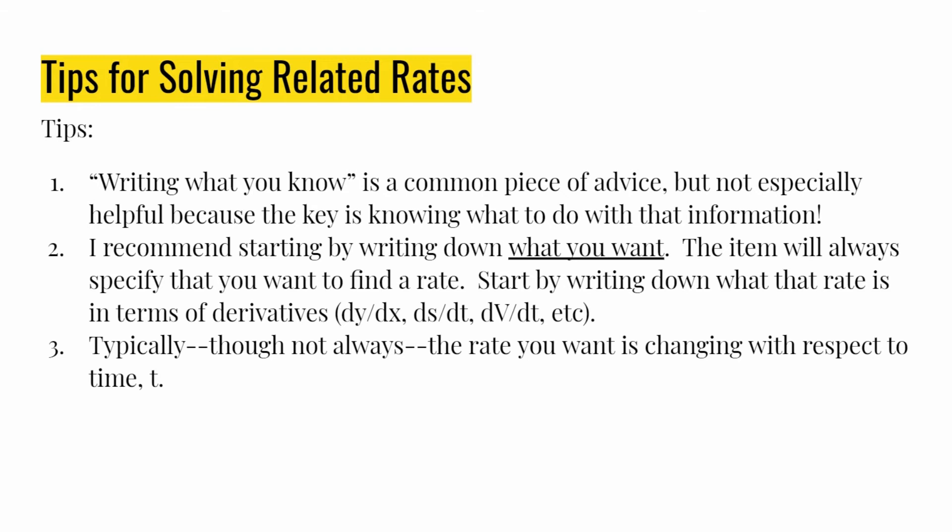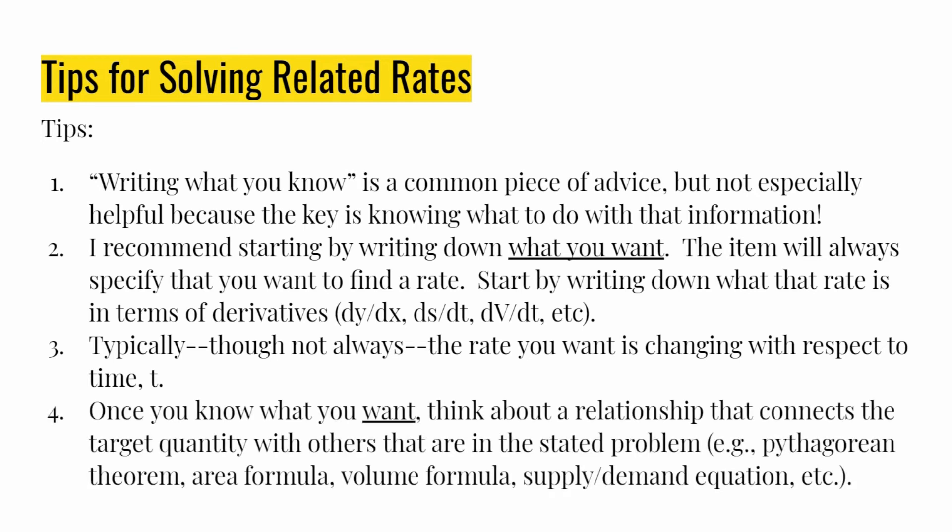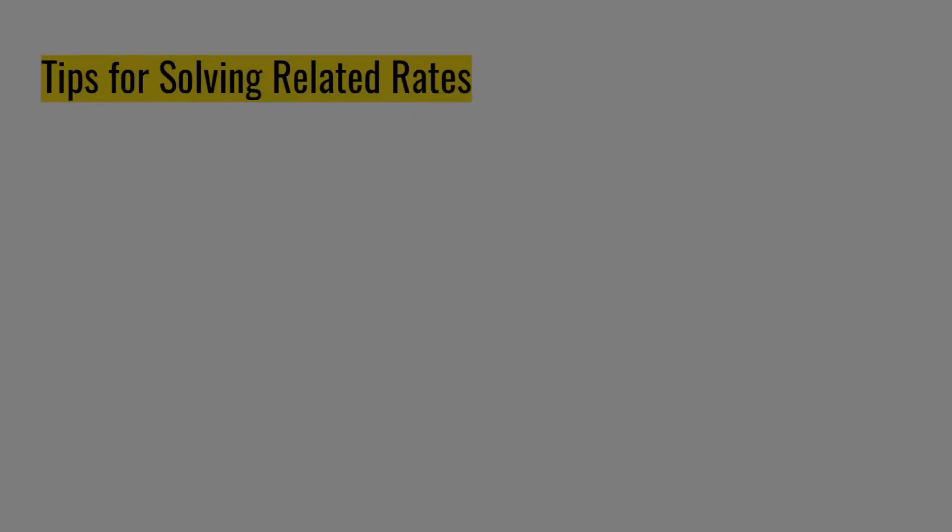If you are talking about finding the change in area based on the change in a side, write a derivative that reflects that. If you are looking at a change in volume over time, dv/dt expresses a rate of change of volume with respect to time. Typically, though not always, the rate you want is changing with respect to time — so you'll often have a ds/dt, or dv/dt, or da/dt. Once you've figured out what you want, your job is to think about a relationship that connects the target quantity — whether that's volume, distance, or temperature — to others.